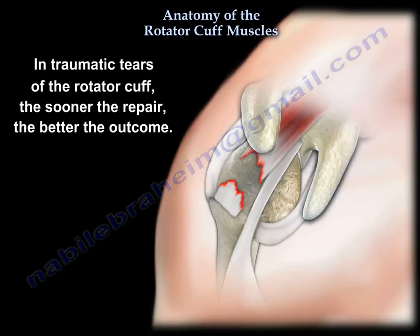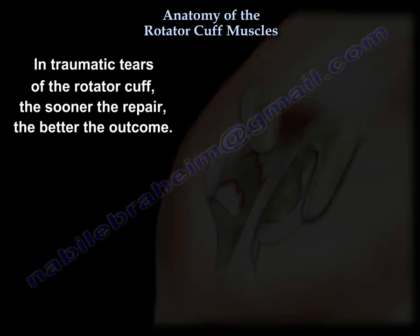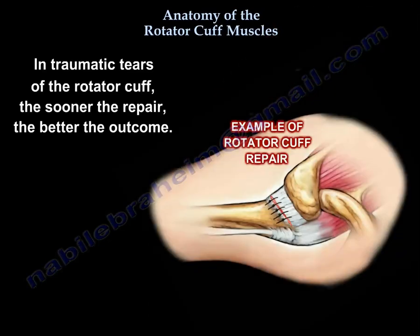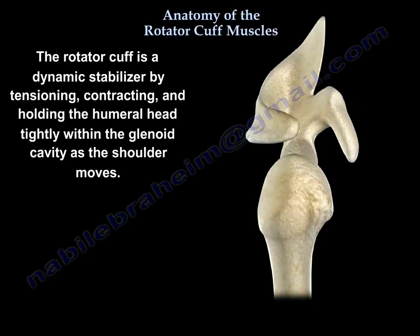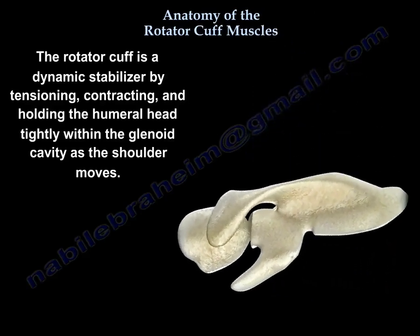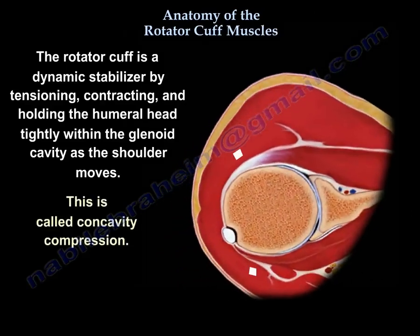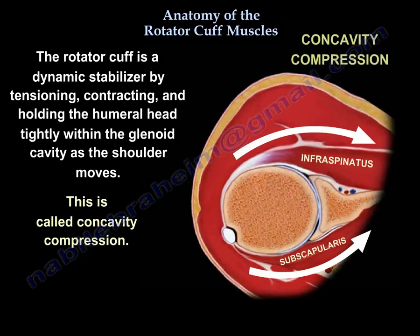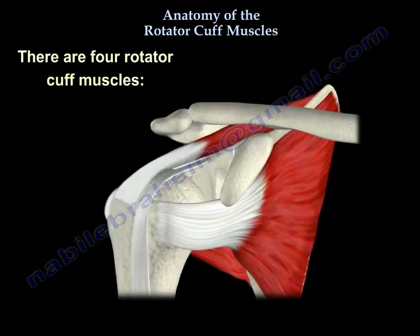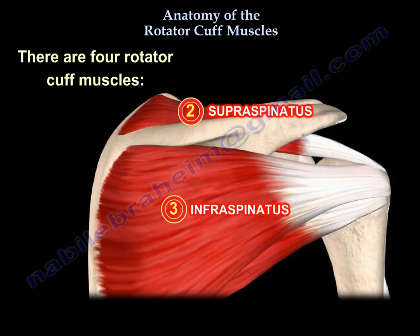In traumatic tears, the sooner the repair, the better the outcome. The rotator cuff is a dynamic stabilizer, tensioning and contracting and holding the humeral head tightly in the glenoid as the shoulder moves — this is called concavity compression. There are four muscles: the subscapularis, the supraspinatus, the infraspinatus, and the teres minor.